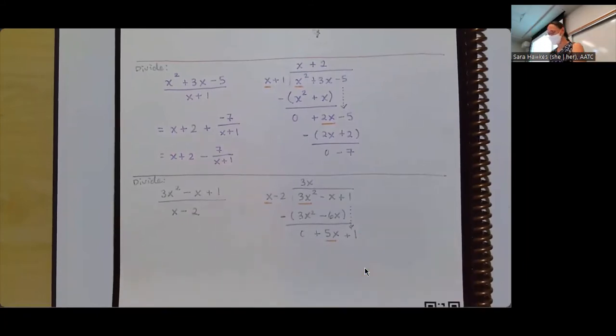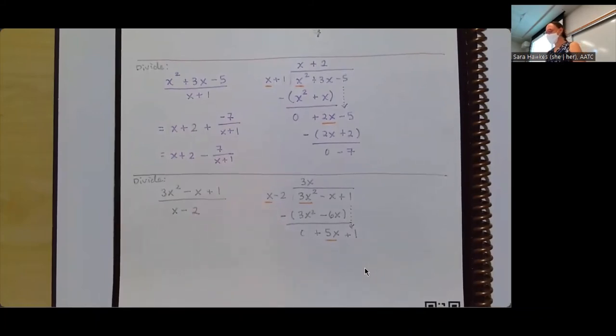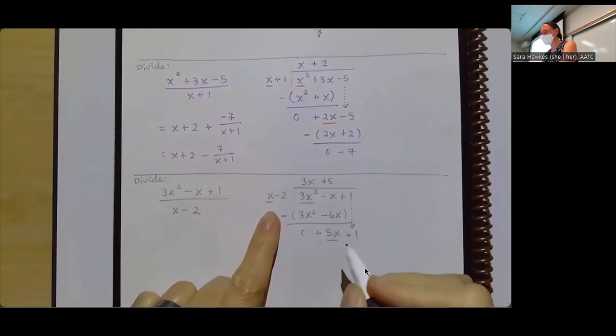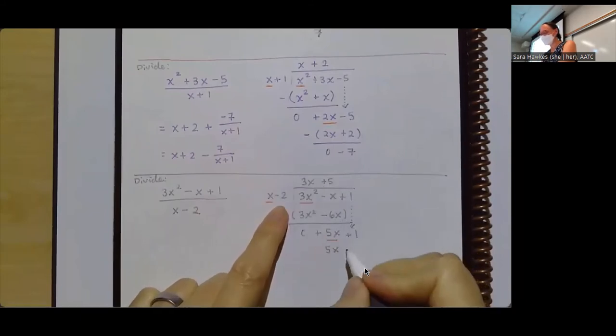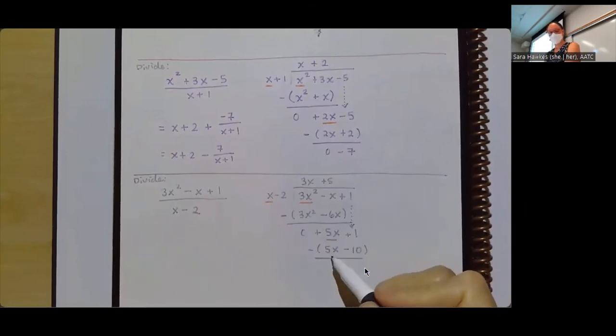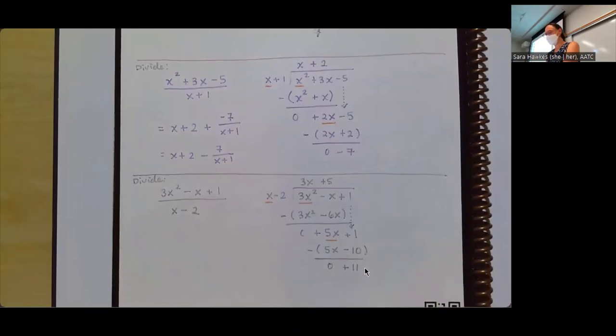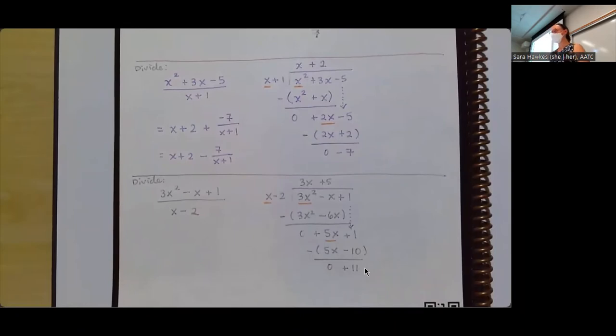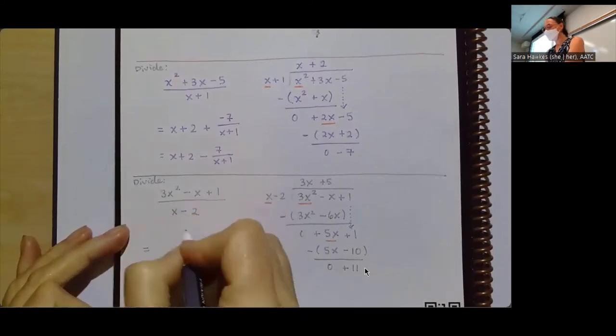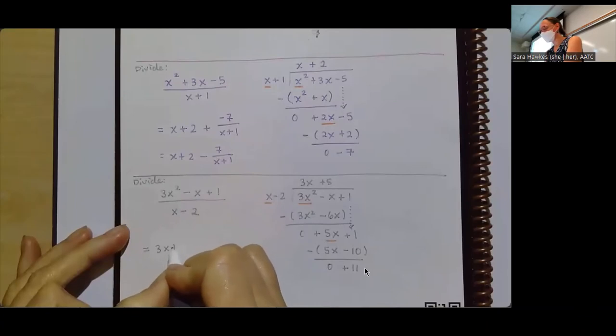Next round, it's that 5x that I want to focus on. So x times what gets me 5x? And that's going to be a 5. So when I distribute that down, 5 times x, I've got 5x and 5 times negative 2, I'm looking at negative 10. So when I subtract that, 5x minus 5x is 0, and 1 minus negative 10, I think is giving me a positive 11. And no one stopped me saying I made arithmetic mistakes, so I'm hoping I did okay. That means that this division is equivalent to 3x plus 5 plus 11 over x minus 2.